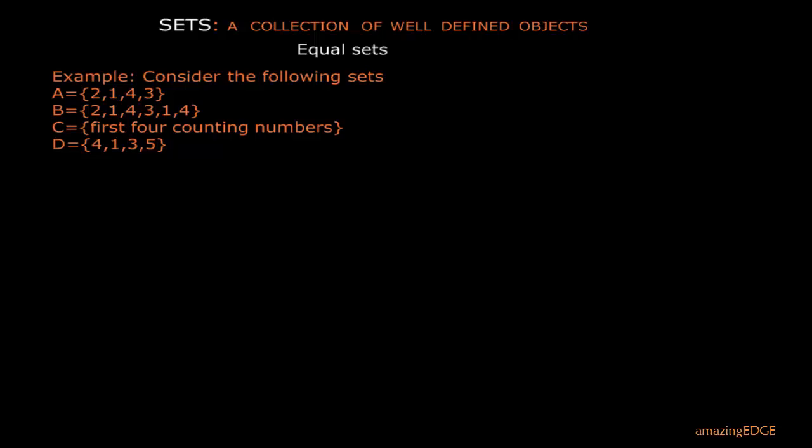So we want to look at equal sets. We want to know when two or more sets are equal to themselves. So we are looking at an example. So we have set A. Set A contains the element 2, 1, 4, 3.